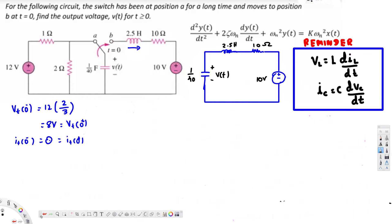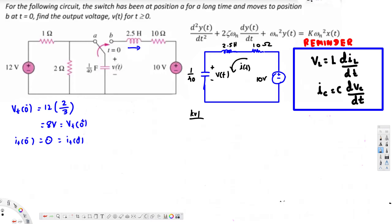Now I am going to use Kirchhoff's Voltage Law to create the equation. Let's say the current is flowing in this direction — let's call this I of t. Kirchhoff's Voltage Law says the sum of all voltages in a loop is equal to zero, or voltage in equals voltage out. Let's call this the voltage source X of t.